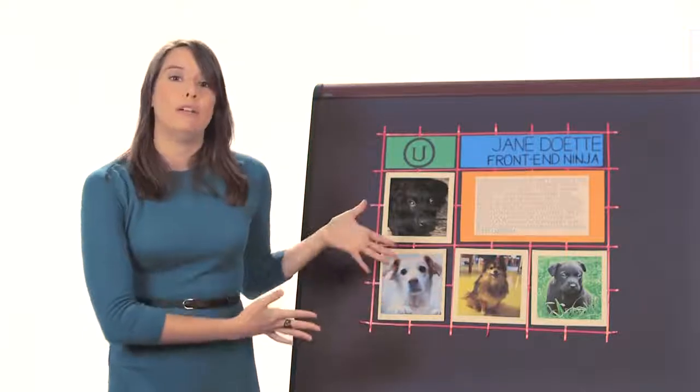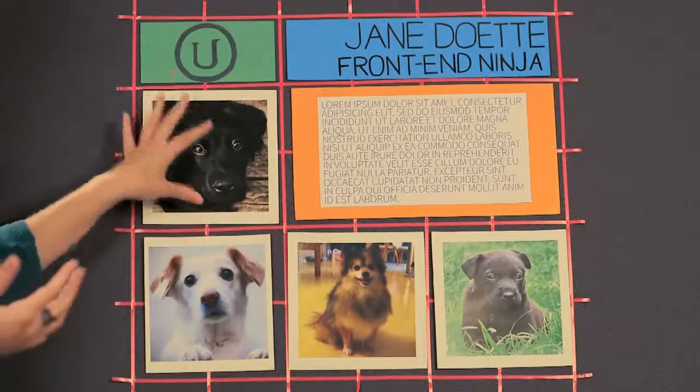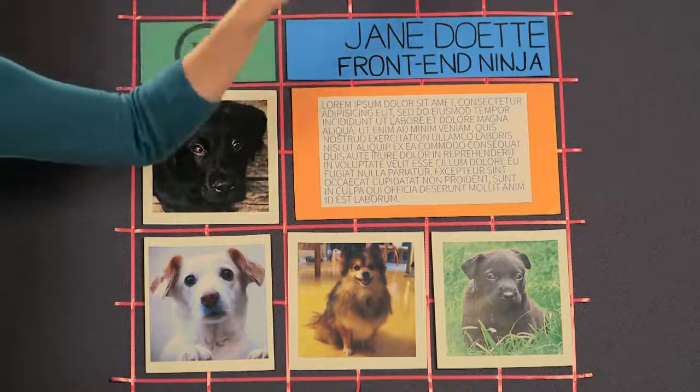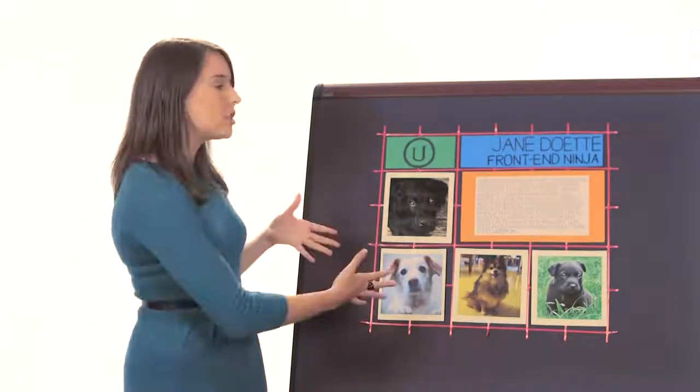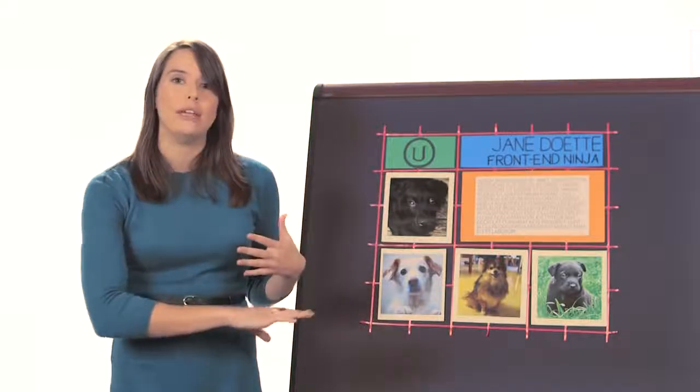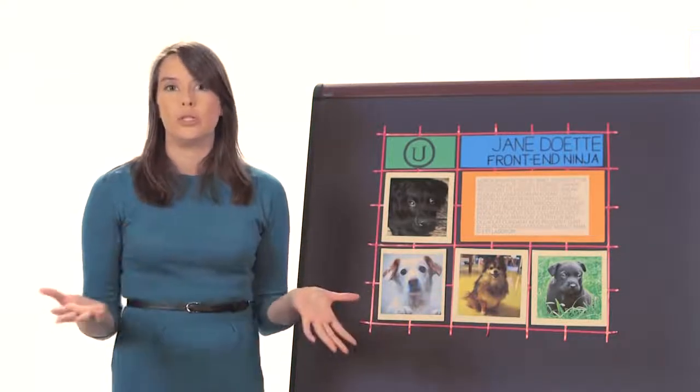Take an example website here. We have many different elements, images, text, a header. And by thinking of things in terms of boxes, we can actually easily rearrange things if we decide to give users a different experience.